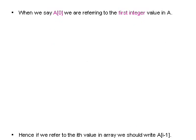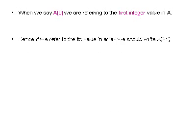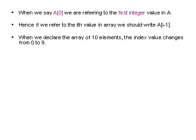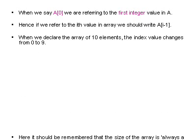Now when we say a[0] that means we are referring to the first integer value in array a. If we say a[1] that means we are referring to the second integer value. Similarly if we are referring to the ith value in an array we should write a[i-1]. When we declare an array of 10 elements the index value changes from 0 to 9.